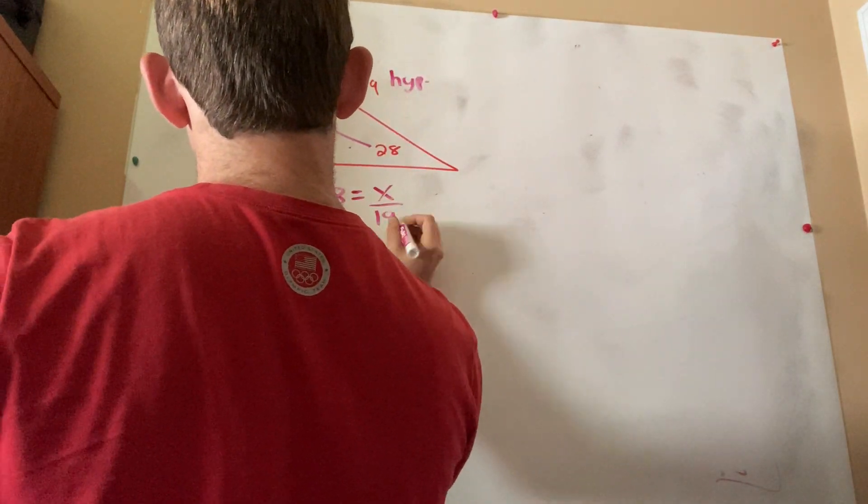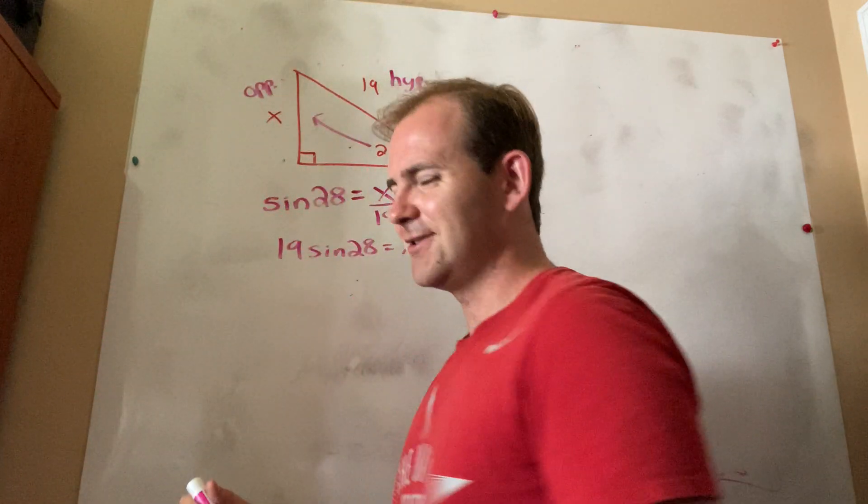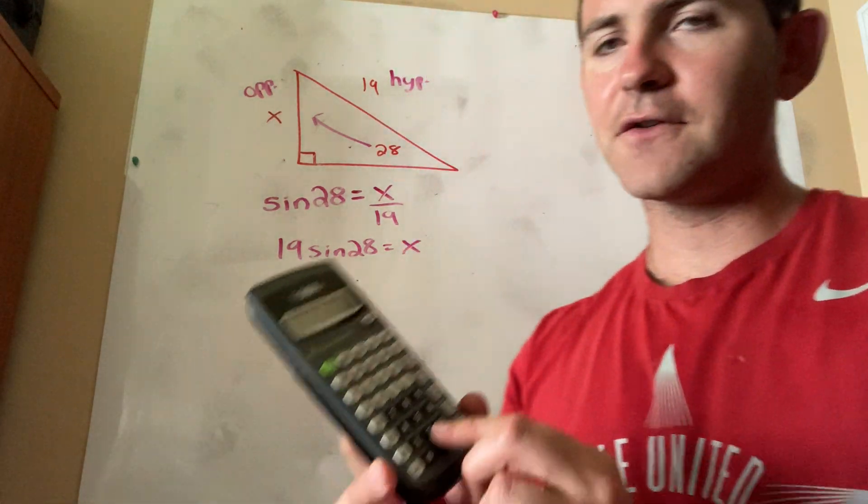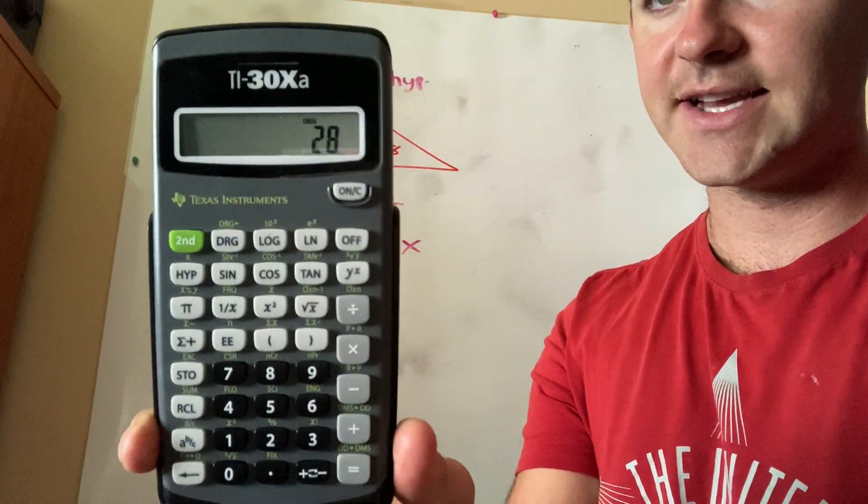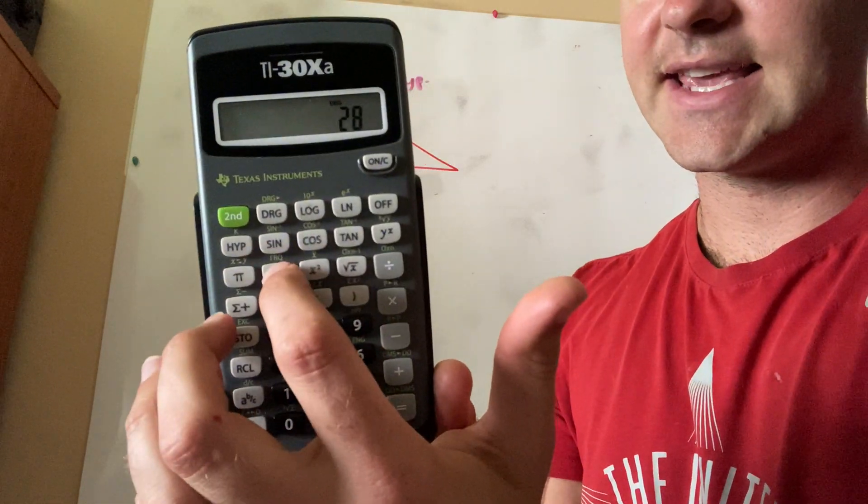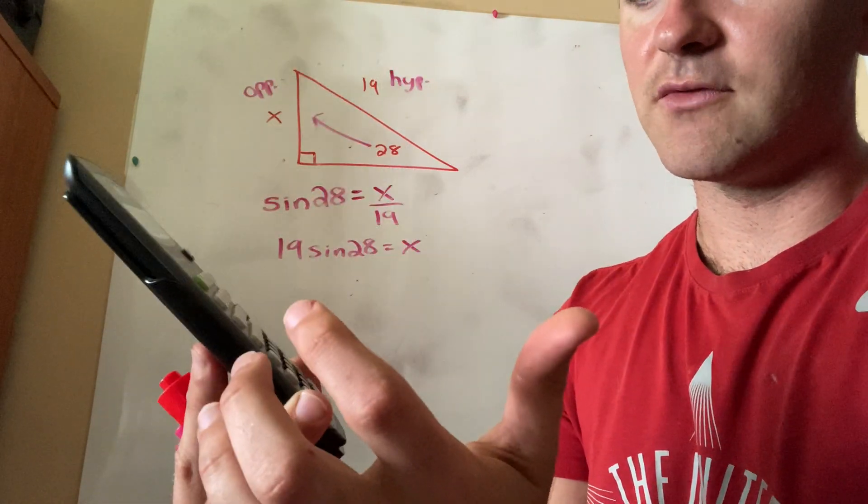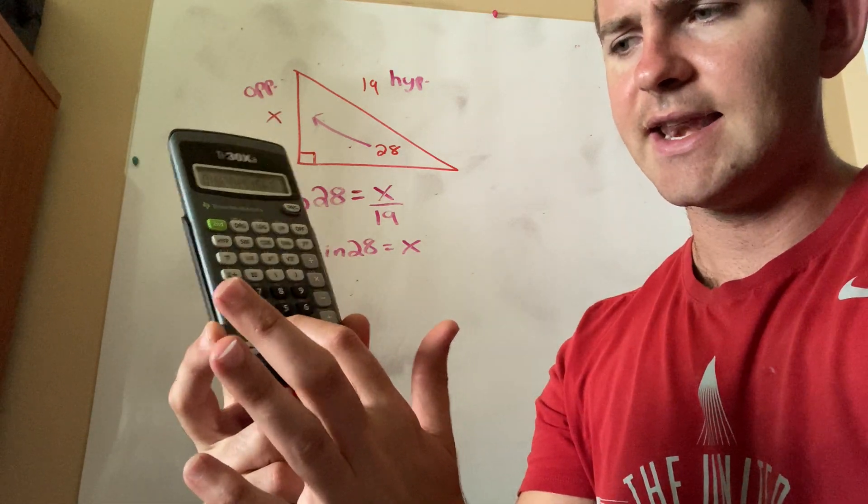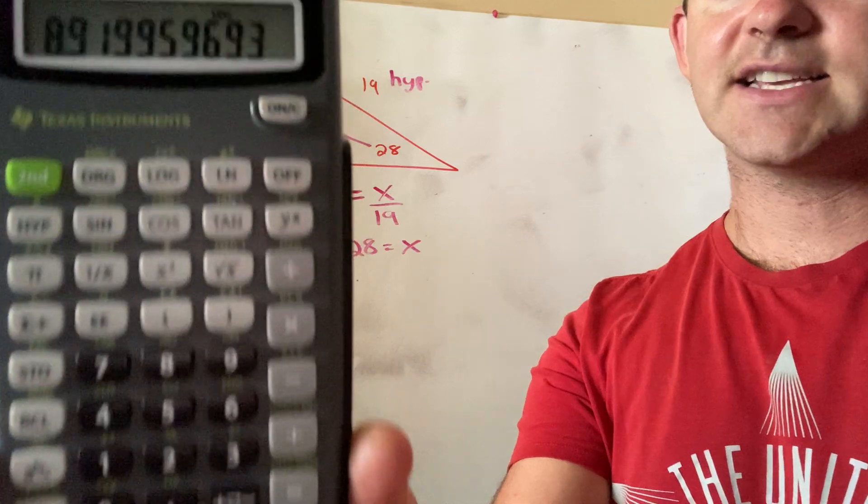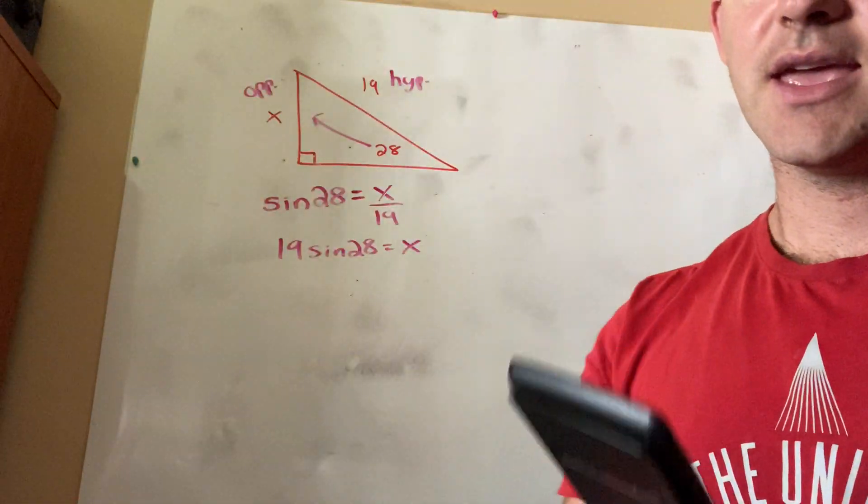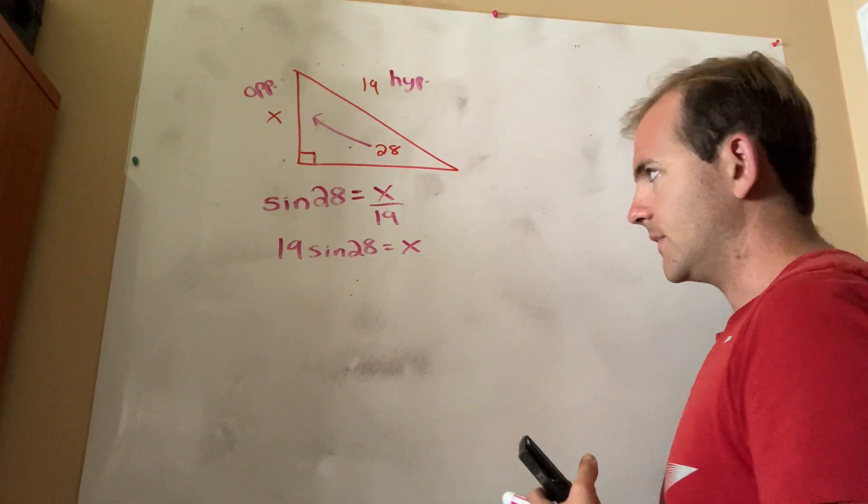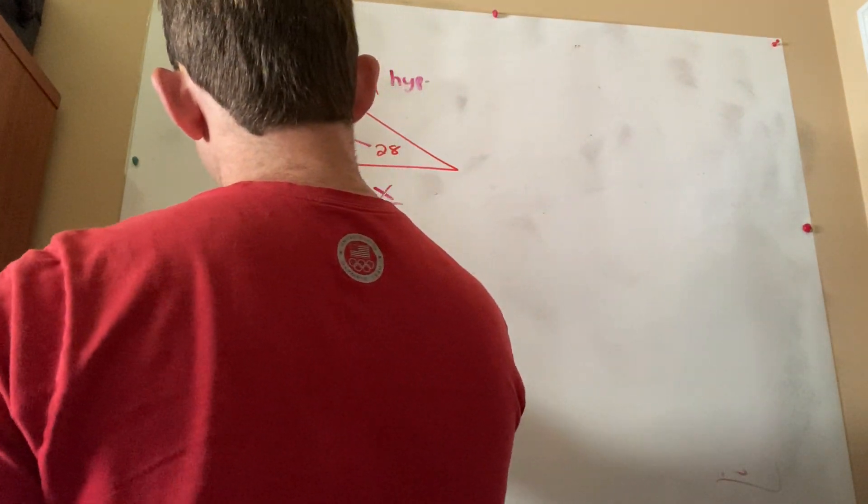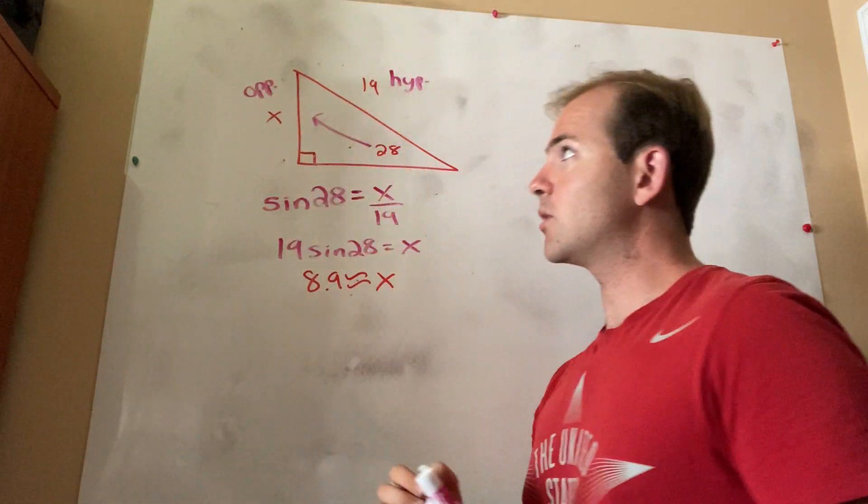And thus, technically, my answer is actually 19 sine 28, which looks really weird, but we can now do that on a calculator. Let's see how. The first thing I'm going to do is enter in 28. Then, I am going to hit the sine key. It says SIN. Gives me some weird decimal. Then, I'm going to multiply that by 19. So I'm going to click times 19, hit equals, and I get this decimal, which, if I round it to the nearest tenth, is going to be about 8.9. So my actual answer here should be around 8.9, which is about equal to X.